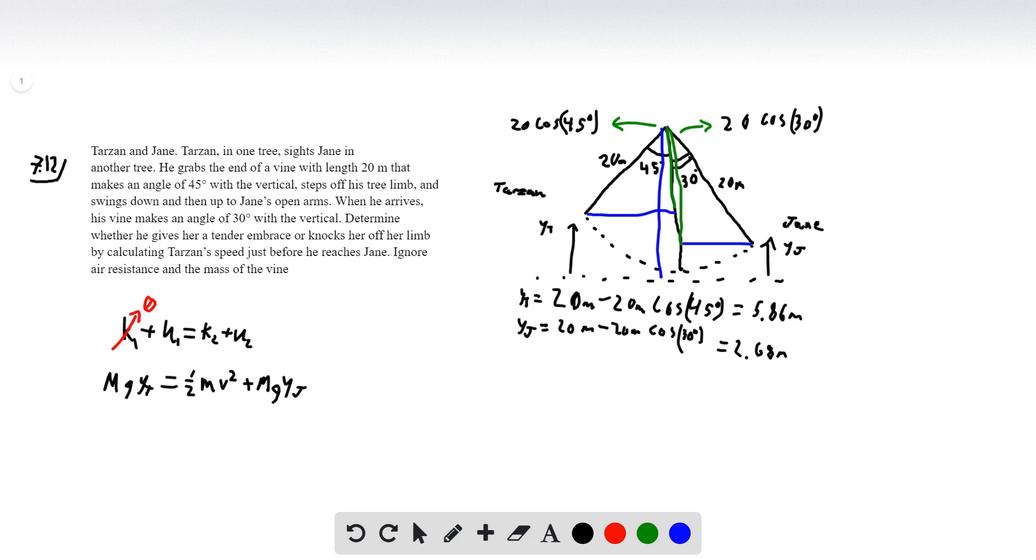Now what we can do is we can substitute the values we have into our expression once we simplify a little bit. First I'm going to simplify by noticing that each term has a mass term, so we can get rid of those individual mass terms. Then what we're left with is g Y_Tarzan is going to be equal to one half v squared plus g Y_Jane.